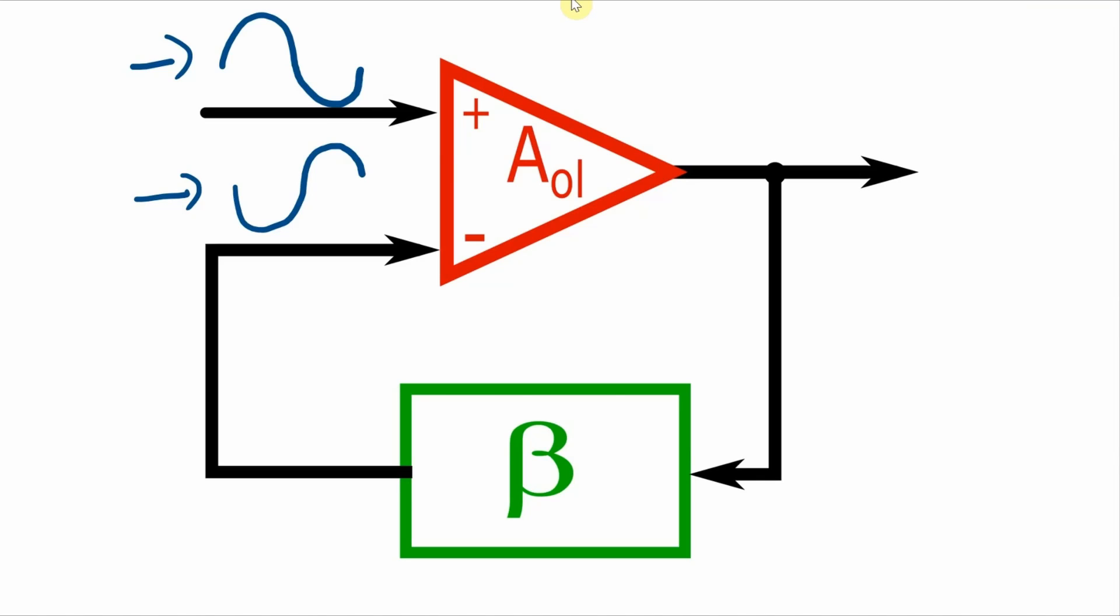So basically, you get an input signal, you amplify it through the open loop part of the gain, feed it back through the network here, back to the input, add it to the original input, and the signal gets bigger and bigger and bigger until it reaches some limit of the system.